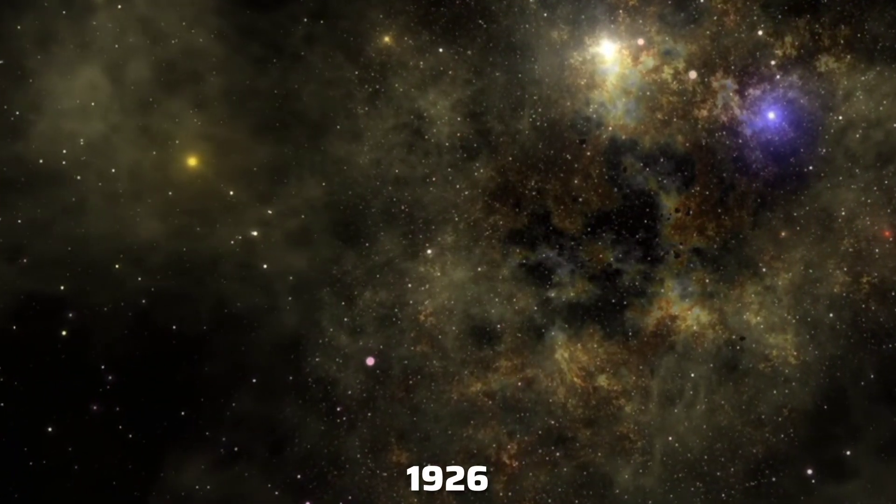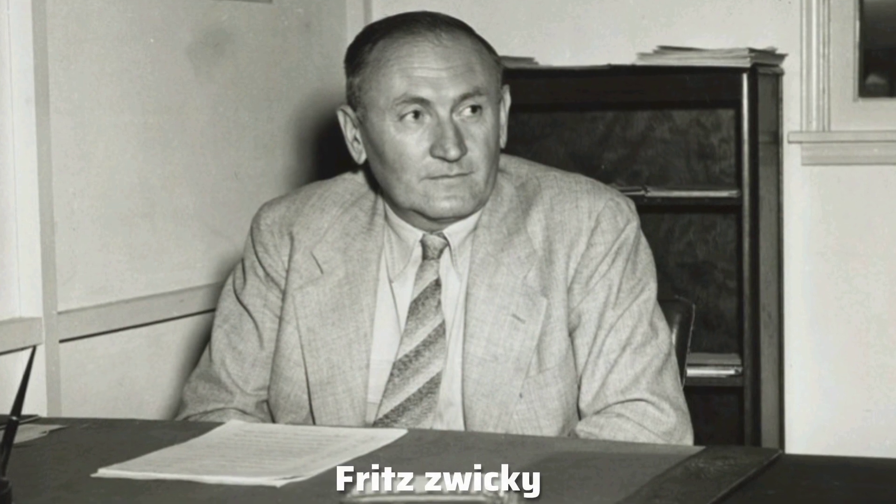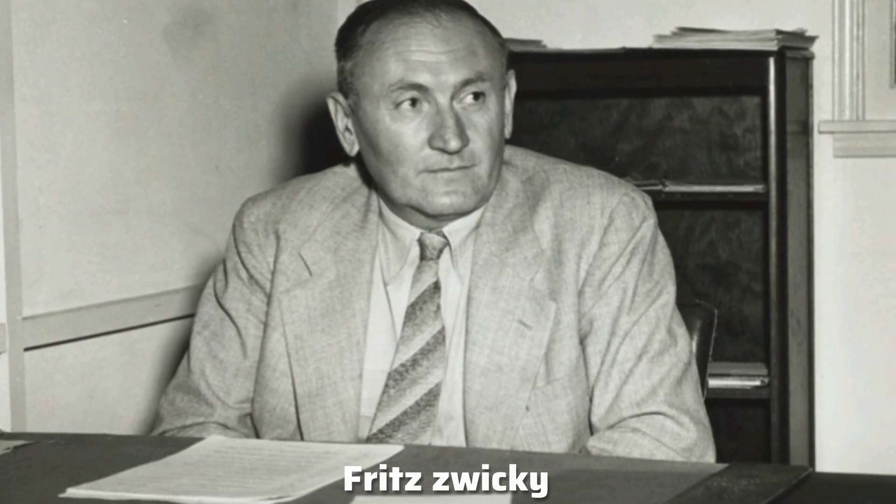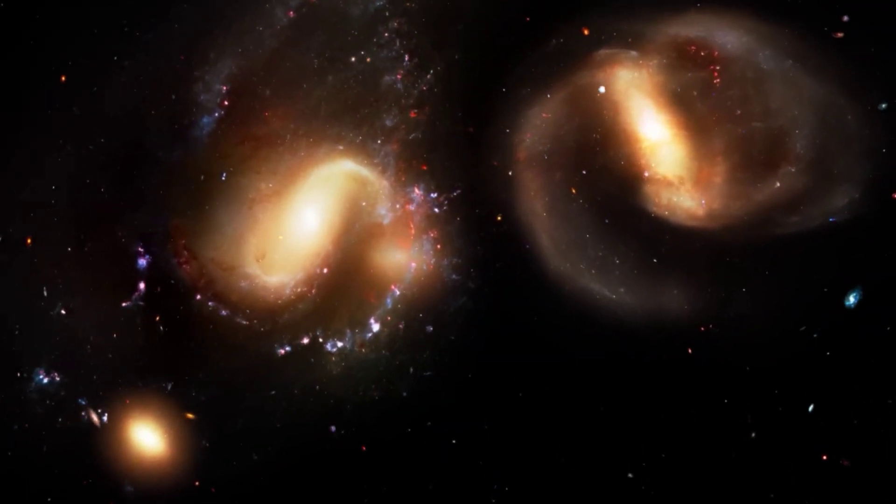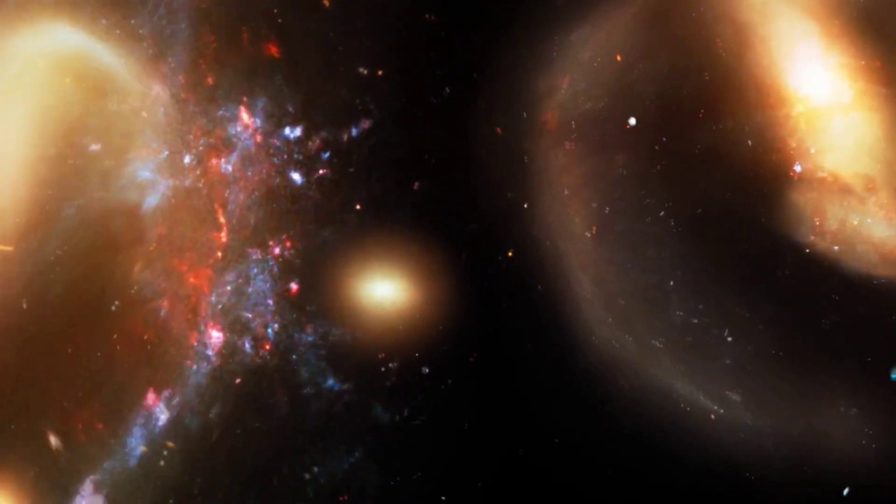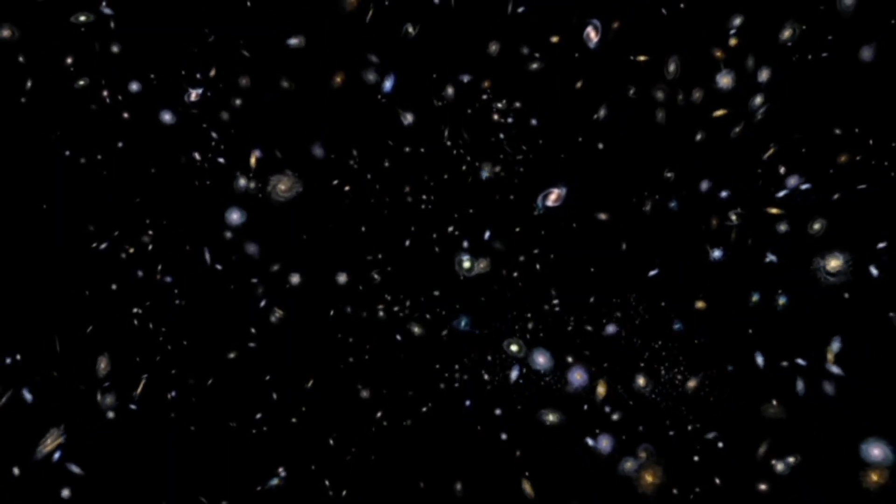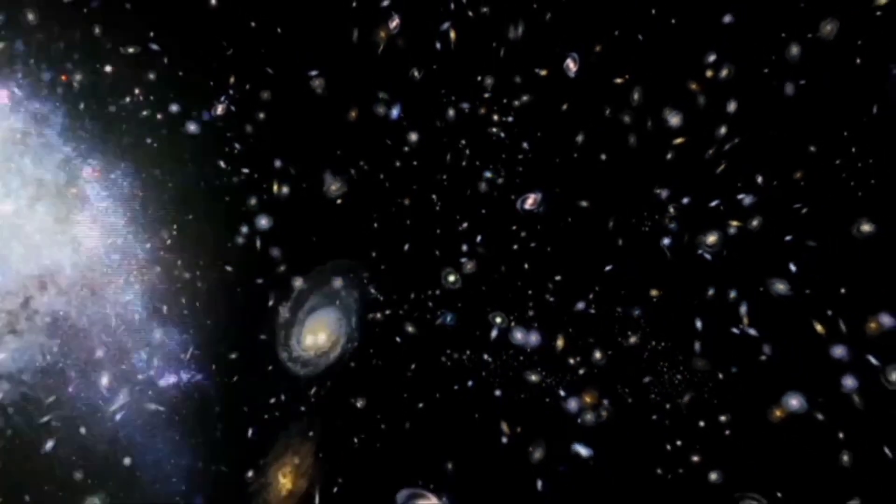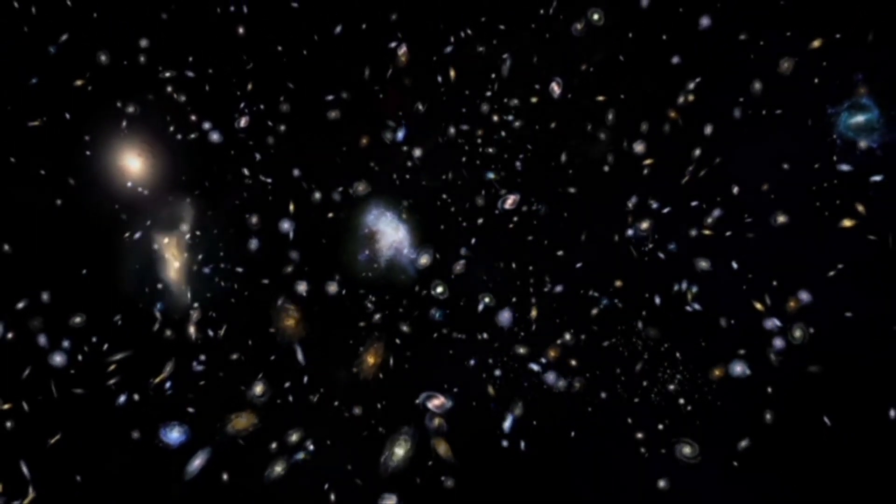In 1929, a Swiss astronomer named Fritz Zwicky had an interesting idea. He said that the way light changes to red might not only be about how far it travels, but it could also be because the light gets tired and loses energy during its long trip across space.